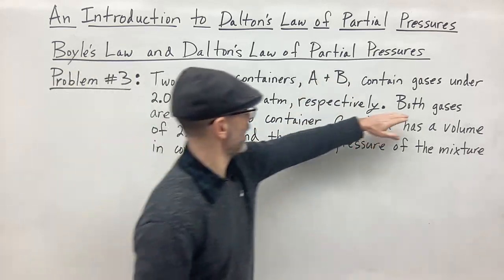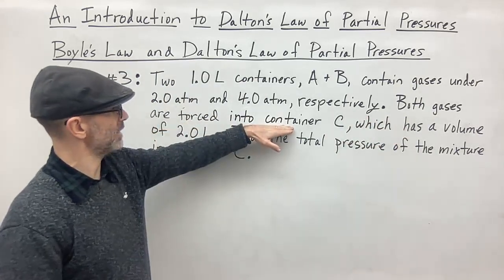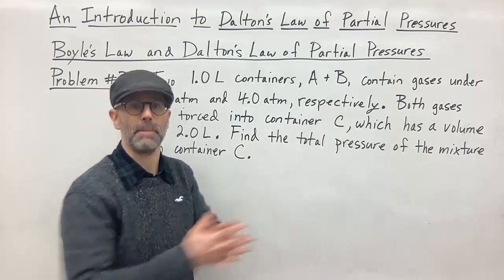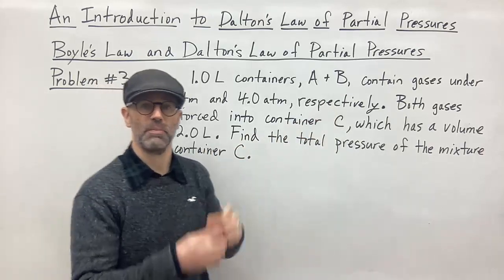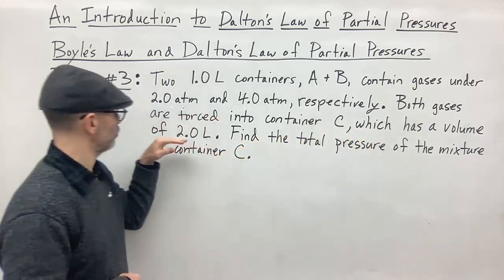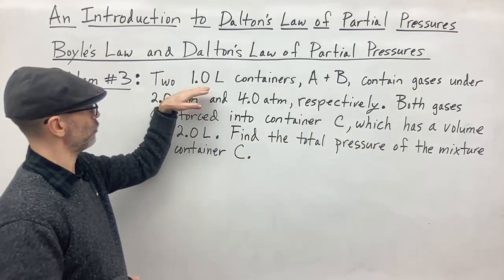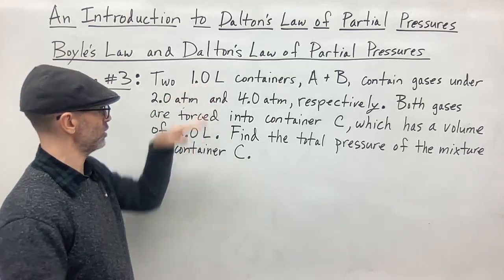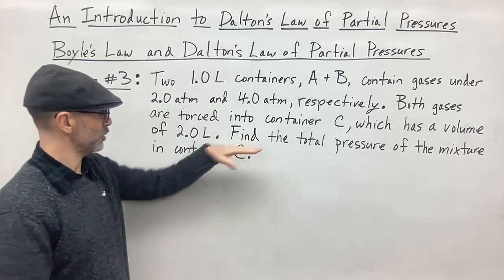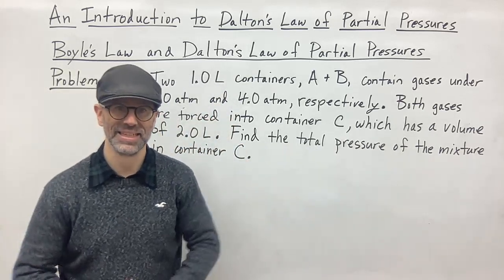Both gases are then forced into container C. You're taking them from containers A and B and putting them both into container C where they're mixed together. Container C has a different volume of 2.0 liters, so you're making the two gases go from 1.0-liter containers to a 2.0-liter container. The question asks you to find the total pressure of the mixture of gases in C.